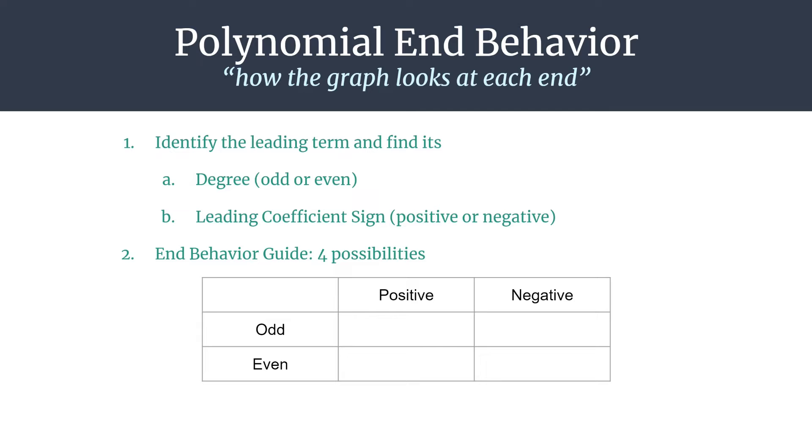So we'll first look if it has an odd degree and a positive leading coefficient. The ends look like these two arrows. Okay, here's what it looks like for a negative leading coefficient but still an odd degree. So you can see it's just the vertical reflection of that.